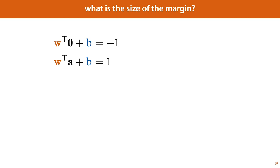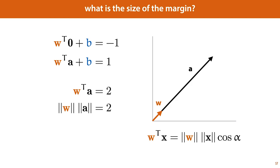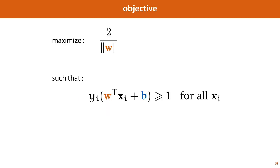At the origin, our hyperplane evaluates to minus 1, and for vector a, it evaluates to 1. Subtracting the first equation from the second, the b's cancel out, giving us that the dot product of w and a equals 2. Since w and a point in the same direction, the angle between them is 0 and the cosine simplifies to 1. Therefore, the magnitude of w times the magnitude of a equals 2, meaning the magnitude of a equals 2 over the magnitude of w. So the value we want to maximize — twice the margin — is equal to 2 divided by the magnitude of w, giving us a complete optimization objective.